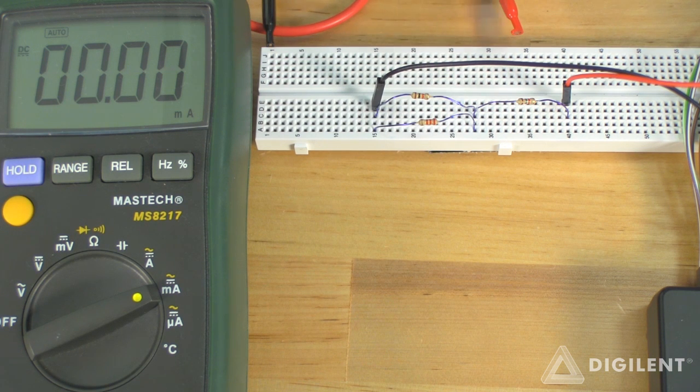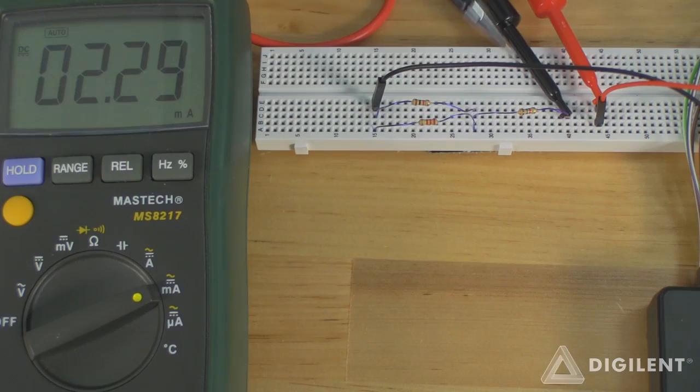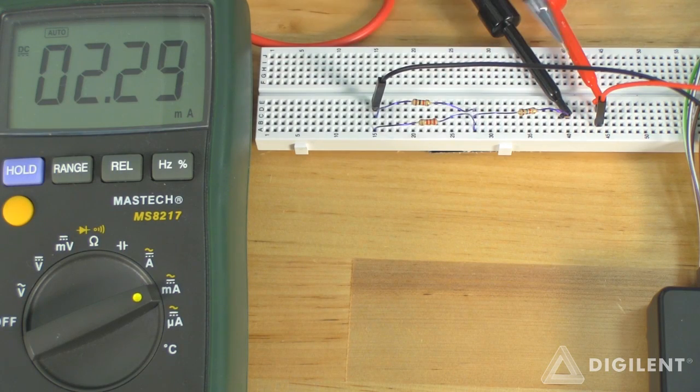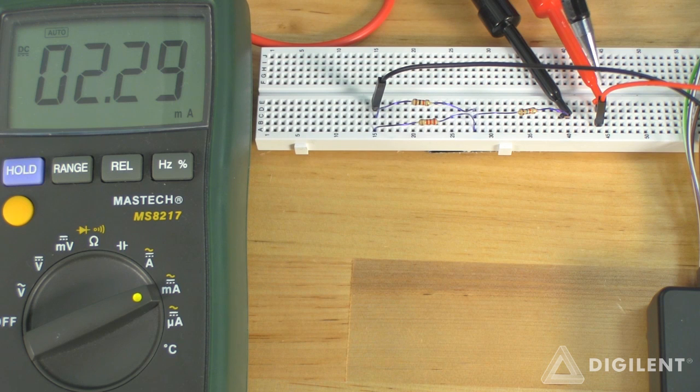Now we need to add our current measurements to this circuit and measure the currents through each resistor. To measure the current through the 1.5 kilo ohm resistor, I've disconnected the source here, connected the ammeter between the source and the resistor. I'm getting about 2.3 milliamps.